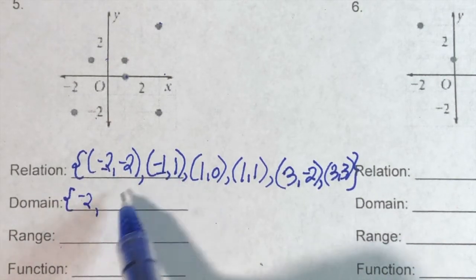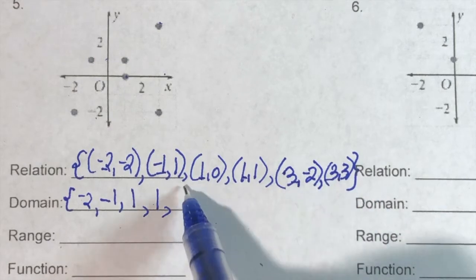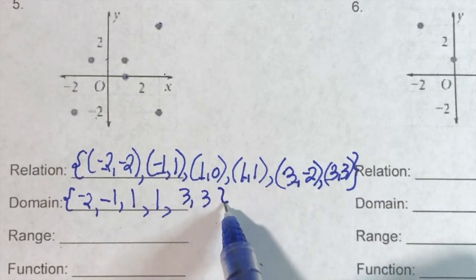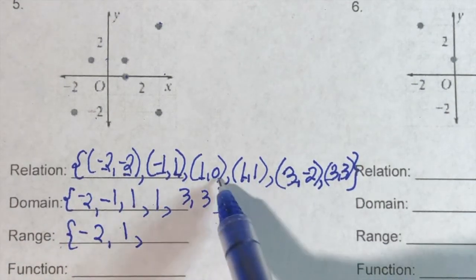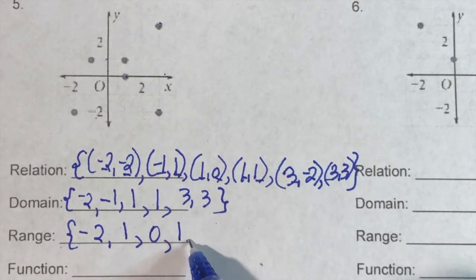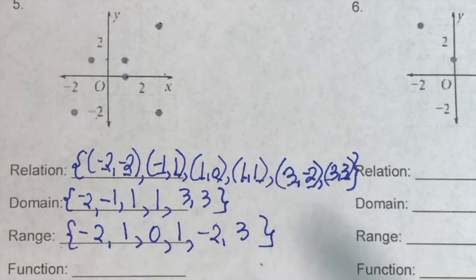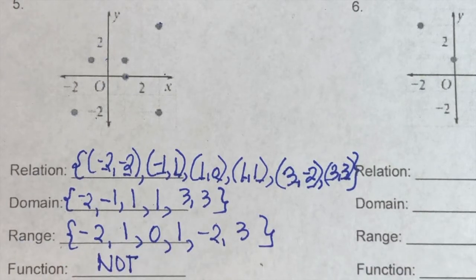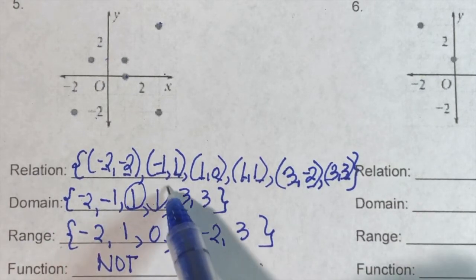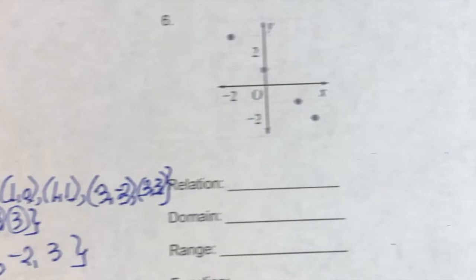So this is the relation based on the graph. The domain is: negative two, negative one, one, three. The range is: negative two, one, zero, one, negative two, and three. Looking at the domain, this relation is not a function because there are values of x repeated.